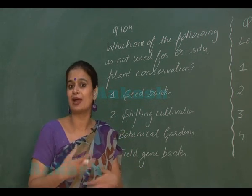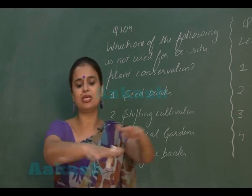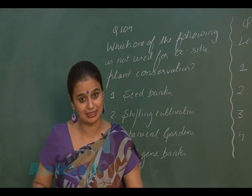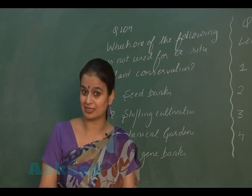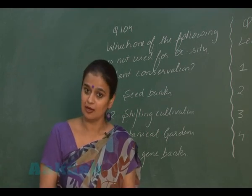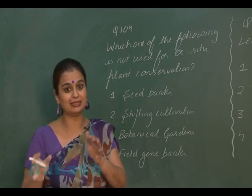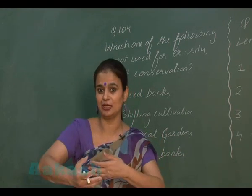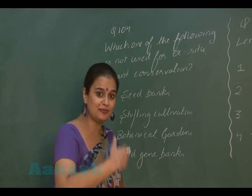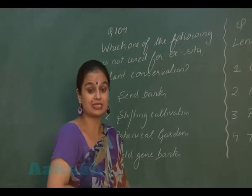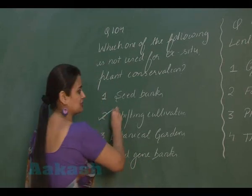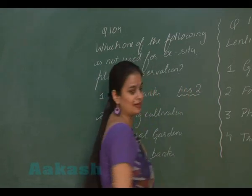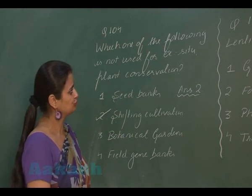Option 2, shifting cultivation, is not related to ex-situ conservation. Shifting cultivation is a practice where cultivation is done on a piece of land, then that area is left to regenerate while farmers move to another piece of land — this way the original area can bounce back. So option 2 is not associated with ex-situ conservation, making it the correct answer for question 104.